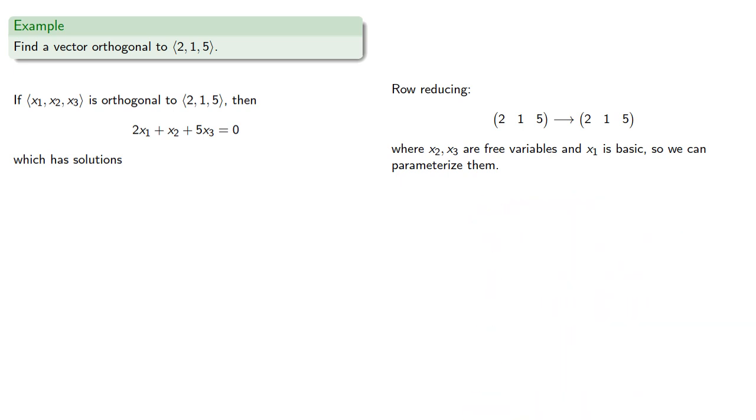Now since our pivot is 2, it will be convenient to include a factor of 2 in our parameterization. So we'll let x3 be 2s, x2 be 2t,